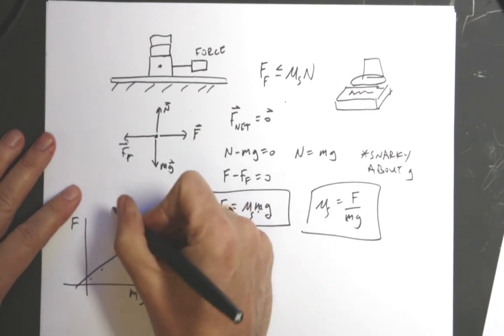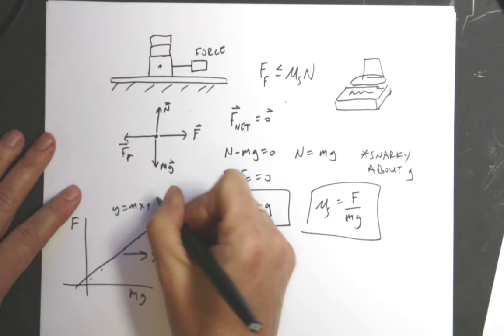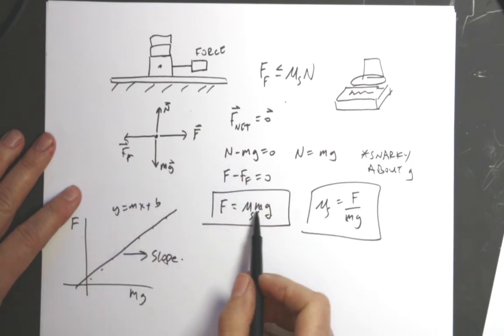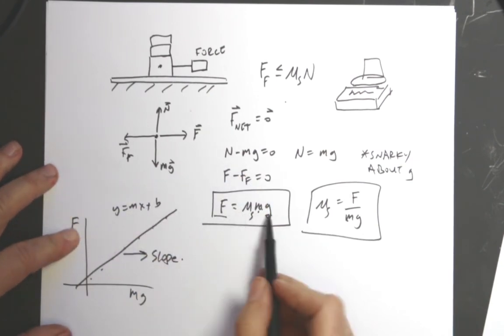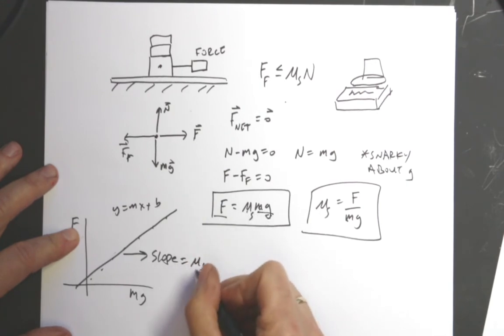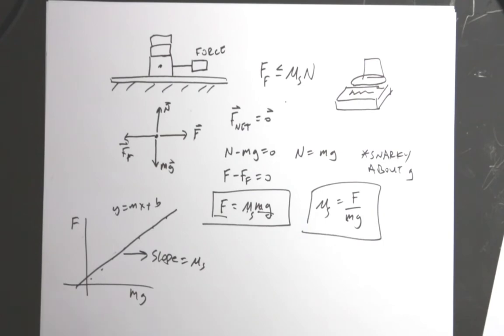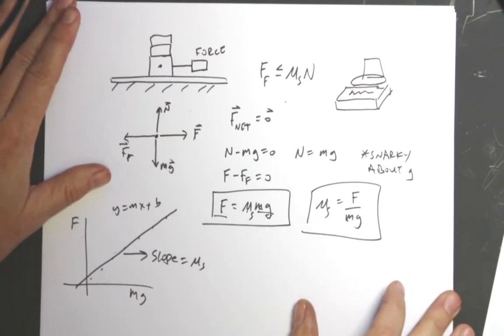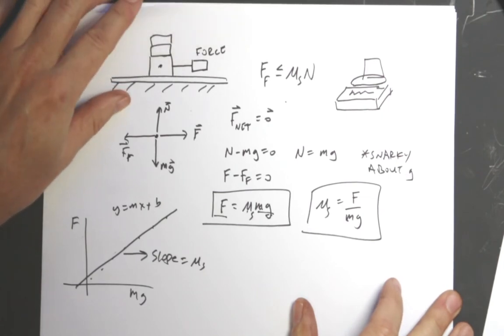If this is y equals mx plus b, the equation of a line, then here I'm plotting F is my y, mg is my x, so this would be my slope. And I think the people grading this would be like, oh that guy's cool. And yes, that's the way I would do it. Are we on part a of that? I guess I'm taking too long.